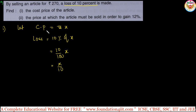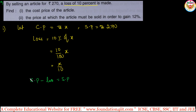The selling price is already given as ₹270. The relation between CP, SP, and loss is: cost price minus loss is equal to selling price. Applying this formula: cost price x minus loss x by 10 equals selling price 270.